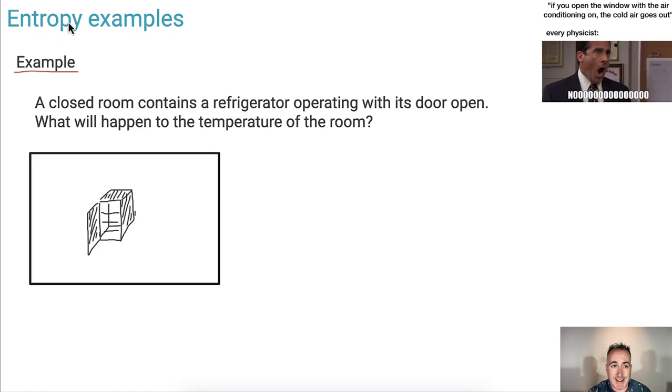Let's look at two examples using entropy. If you open the window with the air conditioning on, the cold air goes out. Physicists, no! Why is that? Remember, it's because hot air comes in. Heat always moves from hot to cold. So let's look at this.